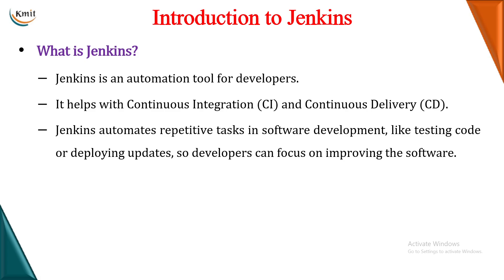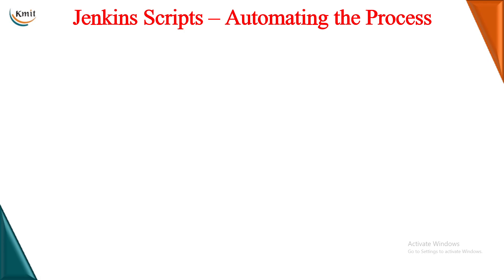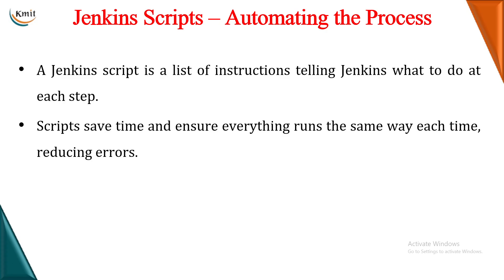When all this automation is happening, your Jenkins will use something called as Jenkins script. Jenkins script is basically a set of instructions that you are giving Jenkins to perform a particular task. You are writing a script which is generally called as a Groovy script. We write that script and we tell Jenkins to take a project, automatically build it, test it and deploy it into a particular environment.